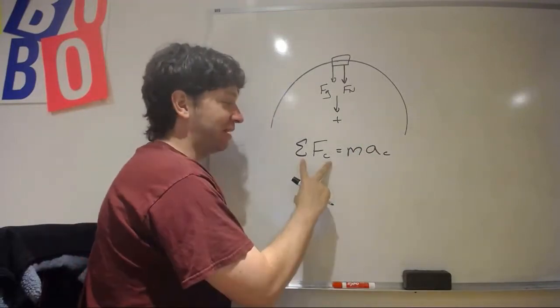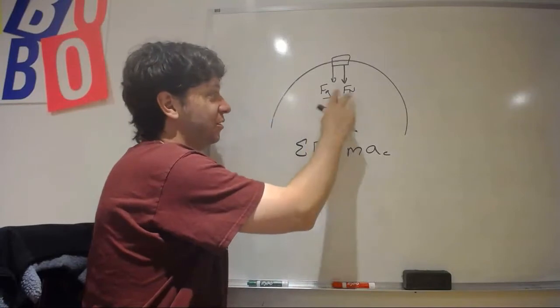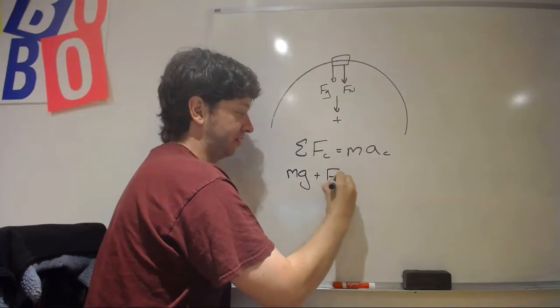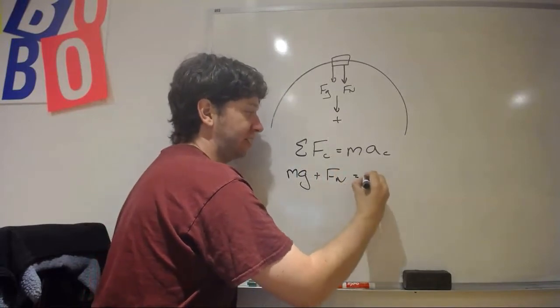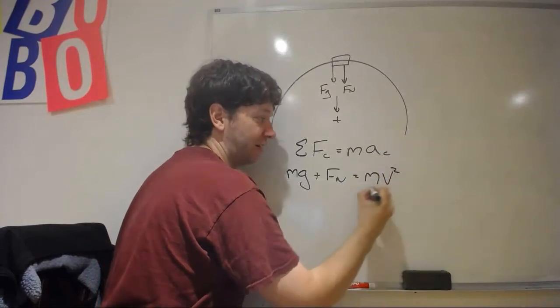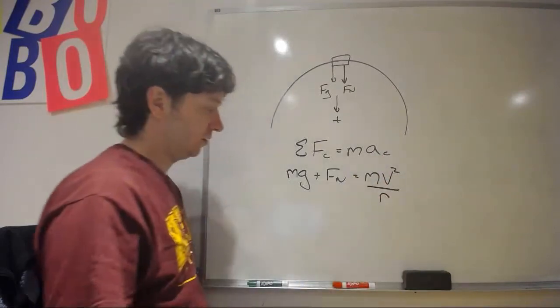Now, acceleration is down at this point, so I'm going to make down our positive direction. And, I'm going to write sum of all centripetal forces equals mass times centripetal acceleration. The forces which make up centripetal force, in this case, are gravity and normal. So, I'm going to write mg for gravity, plus normal force, which equals mass. And, I'm going to change centripetal acceleration to v squared over r.